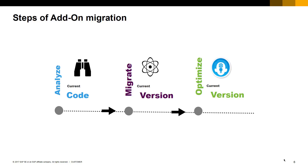The first step is to analyze the current add-on code you have for SAP Business One from Microsoft SQL Server. Is this a solution created with the SAP Business One SDK? Is this a solution that was created with the integration framework? For migration, depending on what solution was used to create the add-on, such as the SDK for example, what do we need to change to have it work on SAP HANA? Are there tools to assist with the migration? What are the best practices for migration?